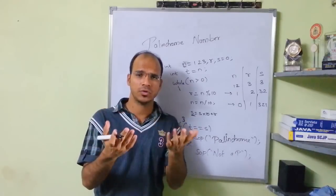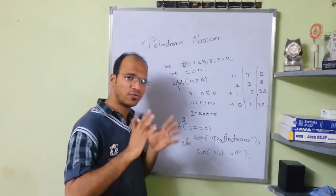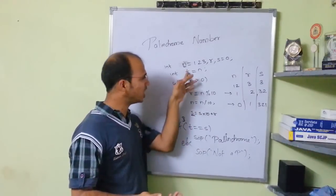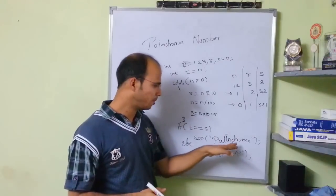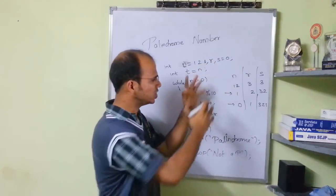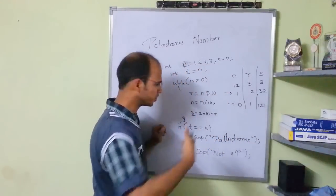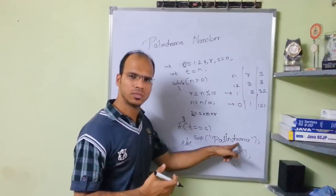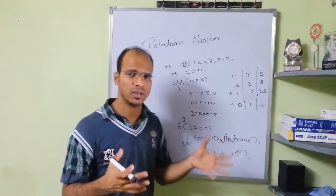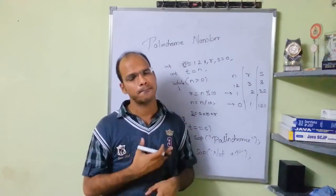To summarize: if input and output are the same, it's a palindrome; if different, not a palindrome. First reverse the number, then compare with the initial value. For 121, the reverse is also 121, so it's a palindrome. For 123, the reverse is 321 — not a palindrome. The actual code link is available in the description below. Please subscribe for further videos. Thank you.